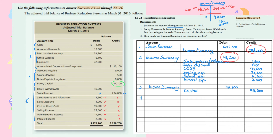The last closing entry is to close Withdrawals. Since Withdrawals has a debit balance, I need to credit Withdrawals and debit Capital — because Capital is the only permanent equity account. We close revenues and expenses to Income Summary, then close Income Summary to Capital, then close Withdrawals to Capital. The Withdrawals amount is $40,000, and we are done with requirement one.